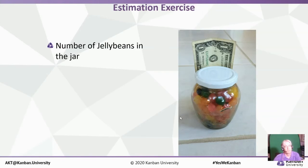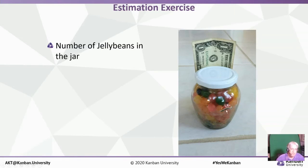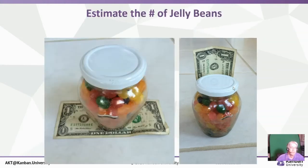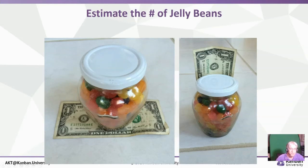This is an exercise I won't do with you here, but I frequently bring around a jar of jelly beans and have a group estimate them. I've run this example enough times that I know what the results will be. We're sort of obsessed with estimation, and one of the things we think is that we're much better estimators than we actually are. This is an example I use to demonstrate that.